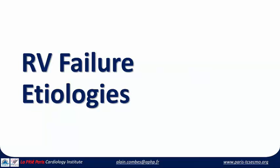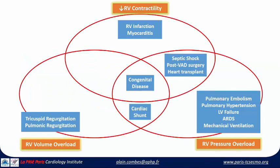The first step: you need to know what we are talking about. What are the etiologies? Here you will have a mix of decreased RV contractility, which is mainly observed in patients with RV infarction or myocarditis. It might also be an increase in pressure overload, as you can see in patients with severe pulmonary embolism, or those who have acute or chronic pulmonary hypertension.